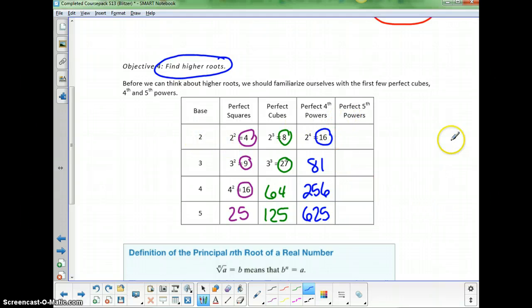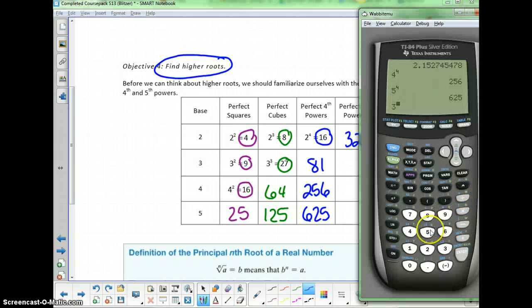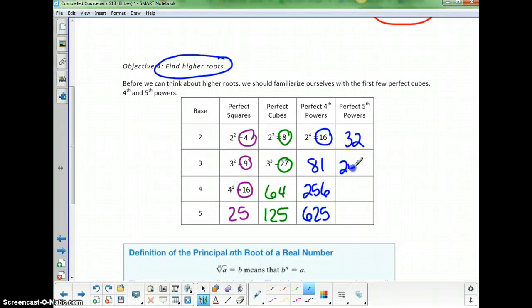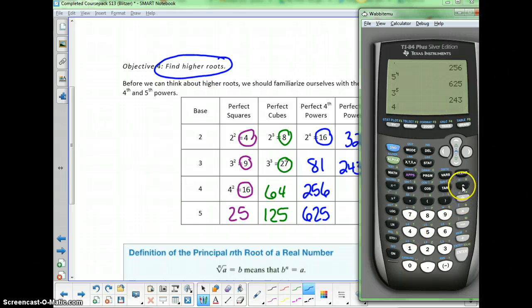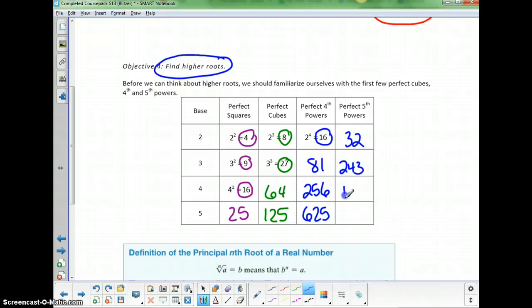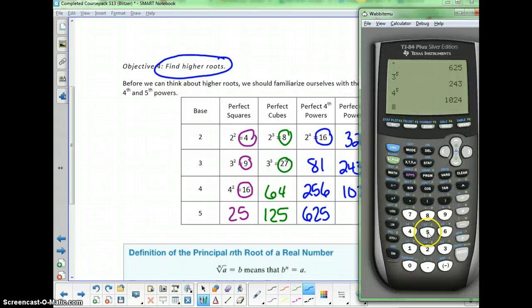Let's look at perfect fifth powers as well. 2 to the fifth is 32, 3 to the fifth is 243, 4 to the fifth is 1024. With fifth powers, these are getting very large very quickly. 5 to the fifth is 3,125.